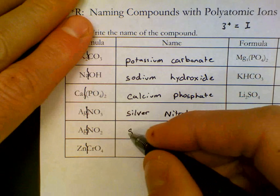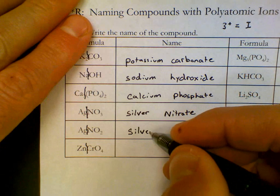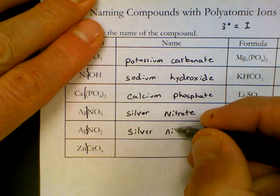Ag, again, is silver. This time we have NO₂, which is nitrite.